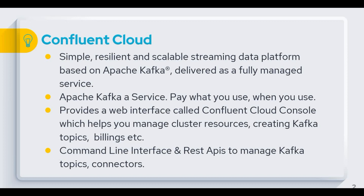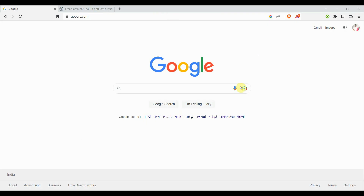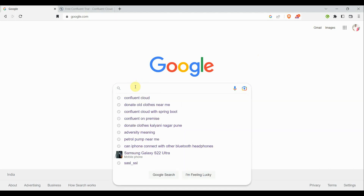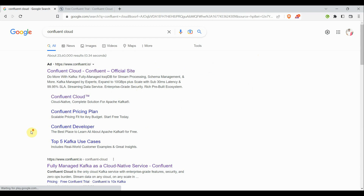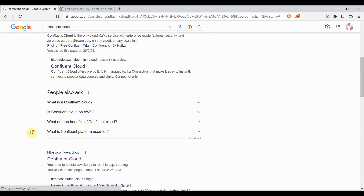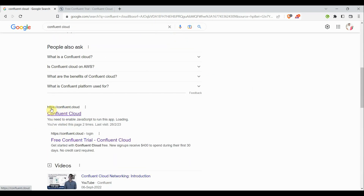Before we kick off connecting and streaming data with Confluent Cloud, the first thing we have to do is procure it. As I said, it's a cloud environment and we pay as per our usage. For demo purposes I'm going to use the trial version with basic features. Right now I'm on Google — if you type 'Confluent Cloud' and go to the link HTTPS confluent.cloud, click on that link.